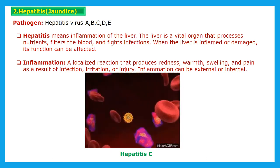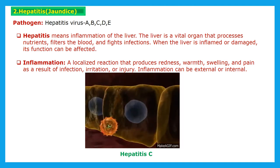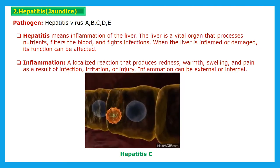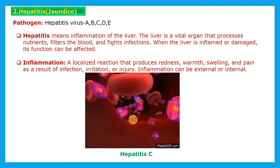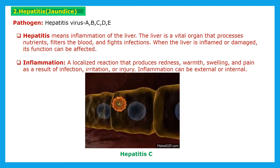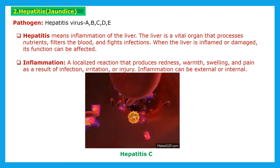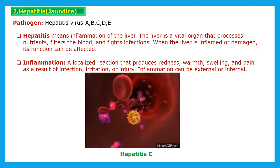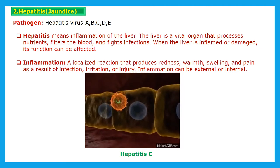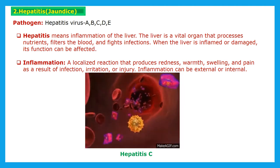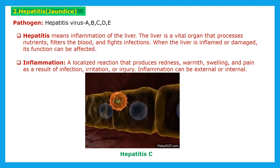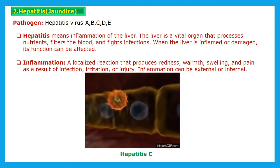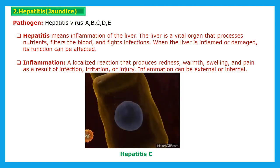Inflammation is a localized reaction that produces redness, warmth, swelling, and pain as a result of infection. Due to some reaction, there is redness or swelling, or sometimes temperature becomes high, or there is pain in the infected part. This inflammation can be sometimes external or sometimes internal.